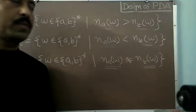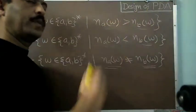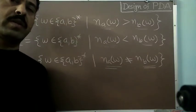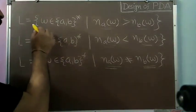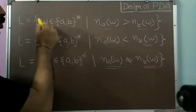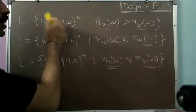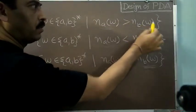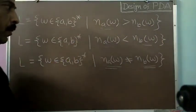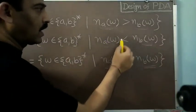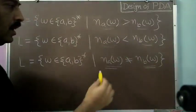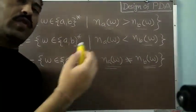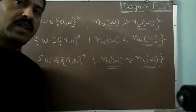Dear students, welcome to this session on design of PDA. In the last session I had given you certain problems to solve at home. These problems corresponded to the language of all words w formed from the alphabet a and b, where: the number of a's were greater than number of b's; the number of a's were less than number of b's; and the number of a's and b's were not equal. Now one by one I will be discussing their solutions.